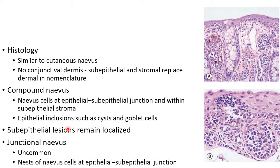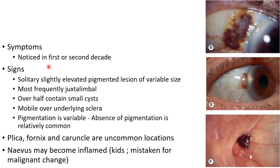Another type of conjunctival nevus is the sub-epithelial nevus; in this case they remain localized. An uncommon type is junctional nevus, in which there will be nests of nevus cells at the epithelial sub-epithelial junction.